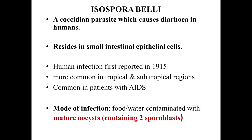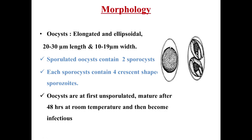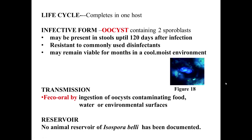Another organism causing diarrhea in immunocompromised patients is Isospora belli, a coccidian parasite residing in small intestinal epithelial cells. Human infections were first reported in 1915 and it is more common in tropical and subtropical areas and in AIDS patients. Mode of infection is food and water contaminated with mature oocysts containing 2 sporoblasts. The oocysts are elongated and ellipsoidal, each containing 2 sporocysts, and each sporocyst contains 4 sporozoites. Oocysts are initially unsporulated, mature after 48 hours at room temperature, and then become infectious. They can remain in stools for up to 120 days after infection and remain viable for months in cool or moist environments.